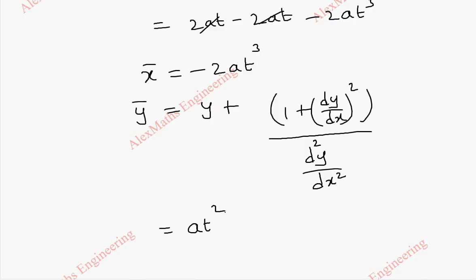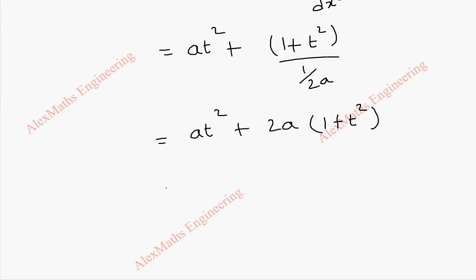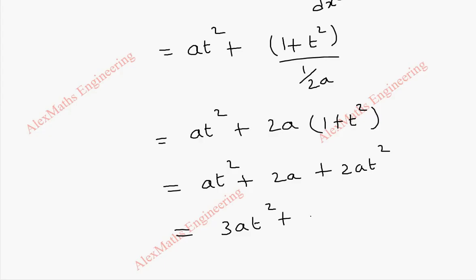Substituting the values, we get at² plus (1 + t²) divided by 1/(2a). The 2a multiplies into the numerator, giving 2a into (1 + t²). Expanding inside: at² plus 2a plus 2at². Combining terms: 3at² plus 2a.